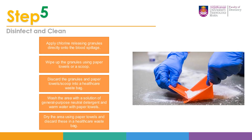Step number five, disinfect and clean. Apply chlorine-releasing granules directly onto the blood spillage. Wipe up the granules using paper towels or a scoop. Discard the granules and paper towels into a healthcare waste bag, then wash the area with a solution of general purpose neutral detergent and warm water using paper towels, and dry the area using paper towels and discard them in a healthcare waste bag. As you can see in the photo, the granules have been released onto the blood spillage, then scooped using appropriate equipment and discarded into the waste bag.